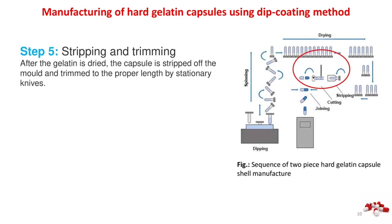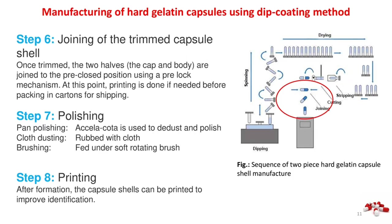Step 5 — Stripping and trimming: after the gelatin is dried, the capsule is stripped off the mold and trimmed to the proper length by stationary knives. Step 6 — Joining: once trimmed, the two halves (cap and body) are joined to the pre-closed position using a pre-lock mechanism. Printing is done if needed before packing in cartons for shipping. Step 7 — Polishing: pan polishing using axelicota to de-dust and polish; cloth dusting rubbed with cloth; brushing fed under soft rotating brush. Step 8 — Printing: capsule shells can be printed to improve identification.